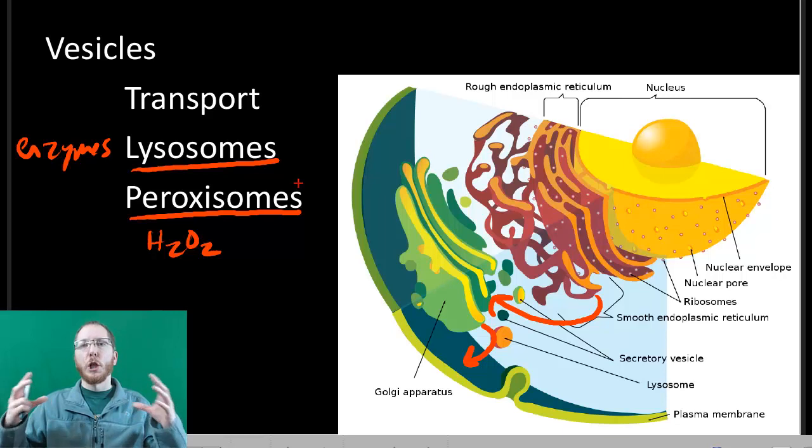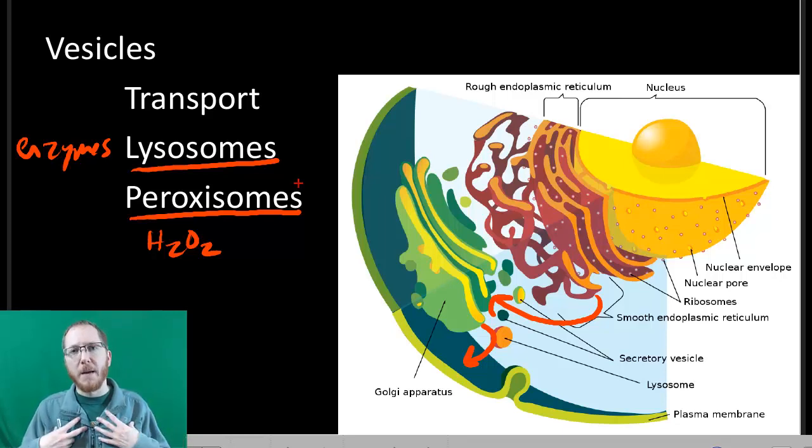So we want to make sure it never gets loose in the cell where it can go around and mess with our proteins that we need, our enzymes that we need, and do some serious damage. And so these are all different types of vesicles.